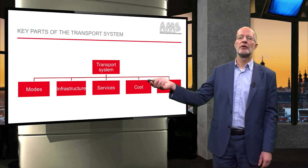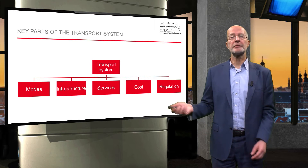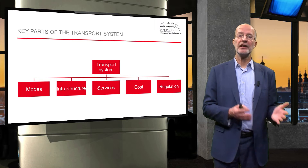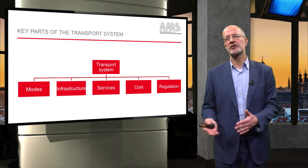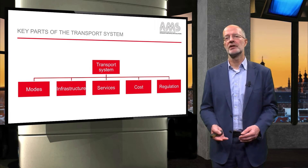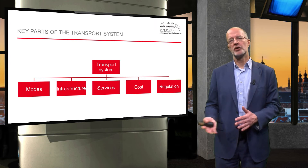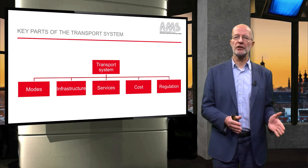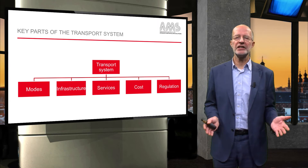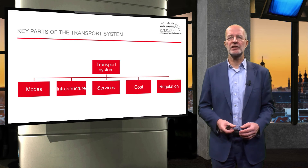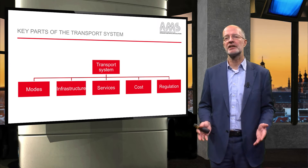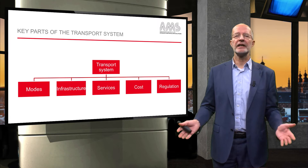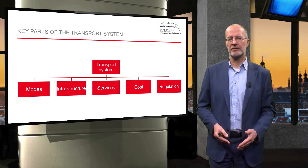As shown on this graph, the transport system includes different modes of transport, infrastructure such as roads, rails and airports, services such as public transport or airline services, costs of travel, and regulations such as speed limits on roads and safety standards for vehicles. I will now briefly introduce these parts of the transport system.